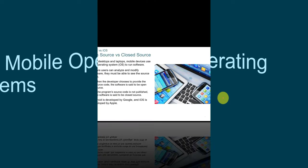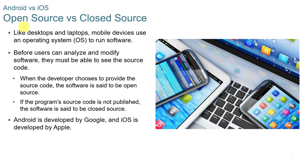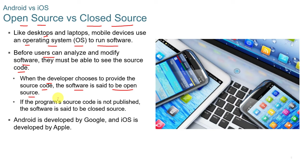Two of the terms you need to be familiar with in this course are open source versus closed source. Open source is software where the code can be seen by everyone. Before users can analyze and modify software, they must be able to see the source code. When developers choose to close the code so it can't be seen, it's considered closed source.